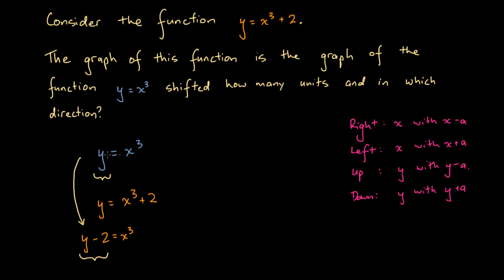If you take this function in blue, y equals x cubed, and graph it, then replace y with y minus 2 to get y minus 2 equals x cubed and graph that, the orange function would appear the same as the blue function except shifted 2 units up. So the graph of this orange function is the graph of y equals x cubed shifted 2 units up. That's the answer: 2 units, in an upward direction.